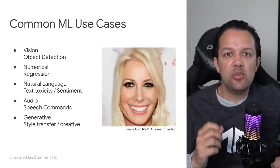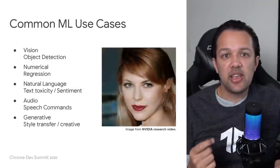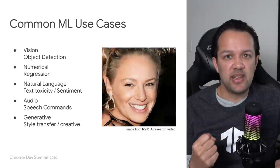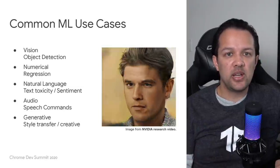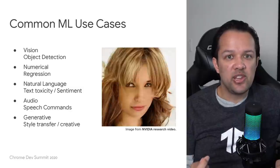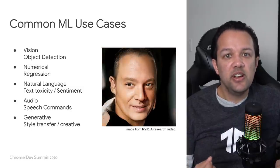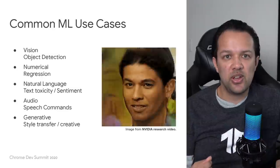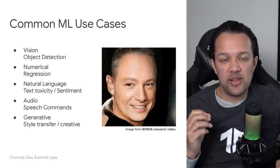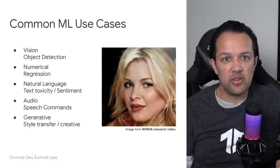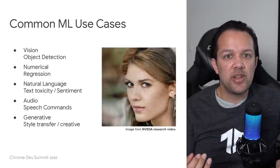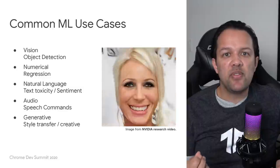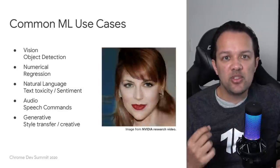Here are just a few more common use cases for machine learning: object detection — recognizing an object from an image; regression — predicting a numerical value from some input, for example, what's the price of a house whose square footage is 1,000 square feet; natural language processing to understand human language, such as marking if a sentence on a blog post comment is toxic or positive or negative; and audio for speech recognition. Many of you have smartphones or have tried the web speech APIs — this is all powered by machine learning too.